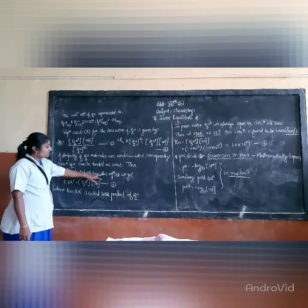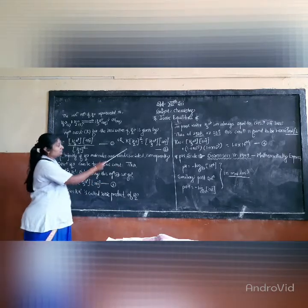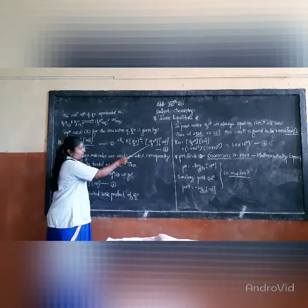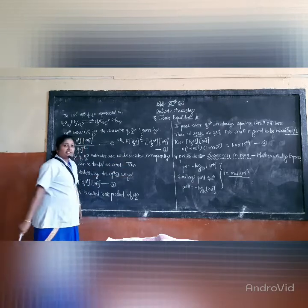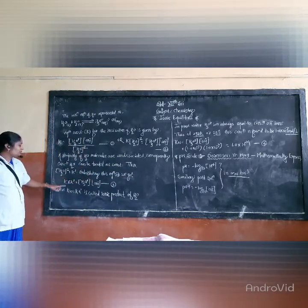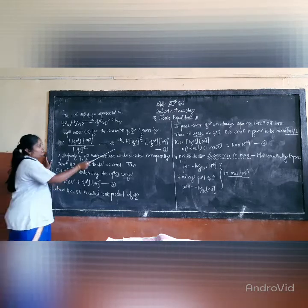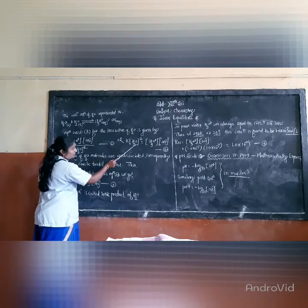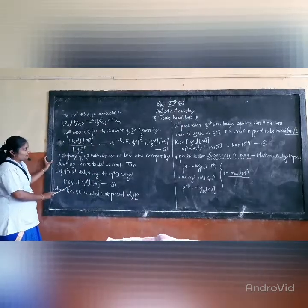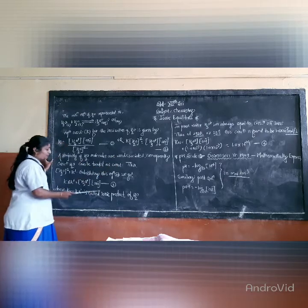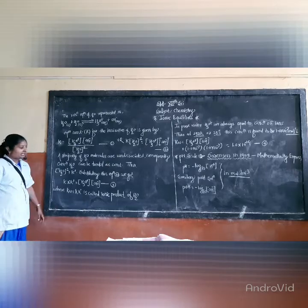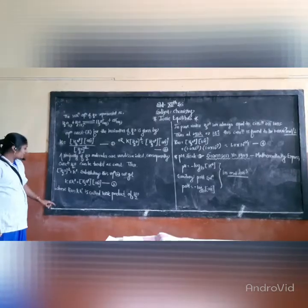Substituting this into equation number two, we get: K into [H2O]² is equal to concentration of H3O⁺ into concentration of OH⁻. This is equation number three, where KW is equal to K into K-dash, giving us the ionic product of water.